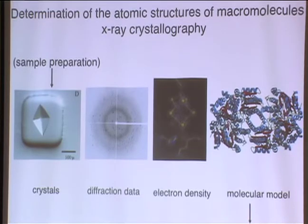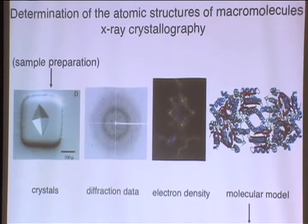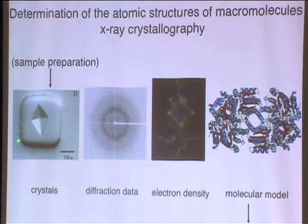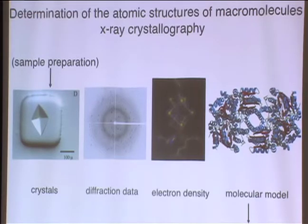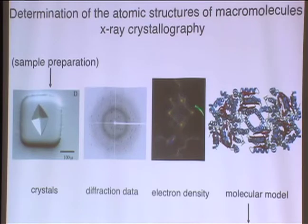We use the technique of x-ray crystallography, which was really brought to its initial form by Linus Pauling at Caltech. The idea is that you have the system of interest that you want to study. We crystallize it — not only because crystals look beautiful, but because it holds all the molecules in a defined orientation. We stick them in an x-ray beam, the x-rays get scattered by the electrons in the object, we get electron density maps that we interpret, and we finally get a structure.